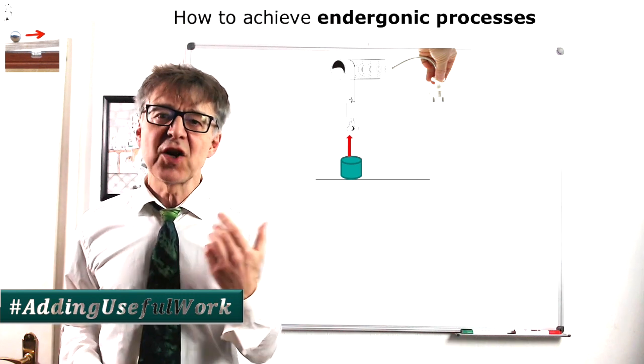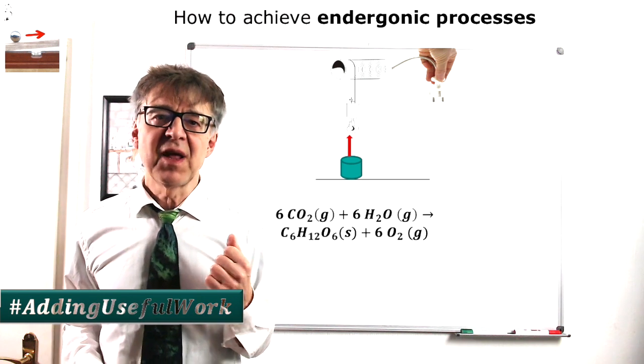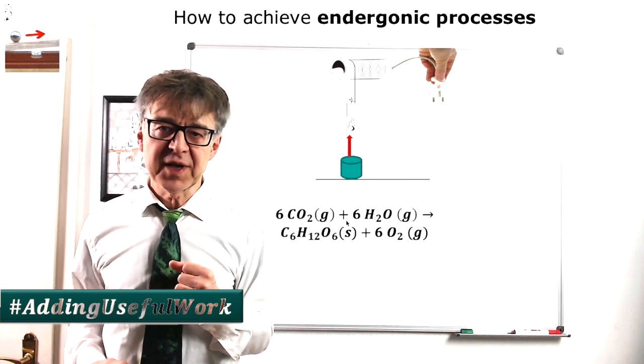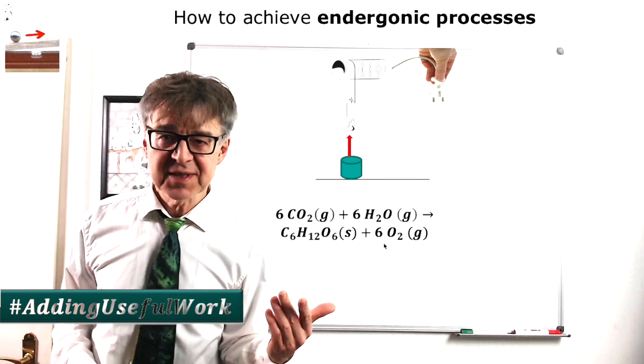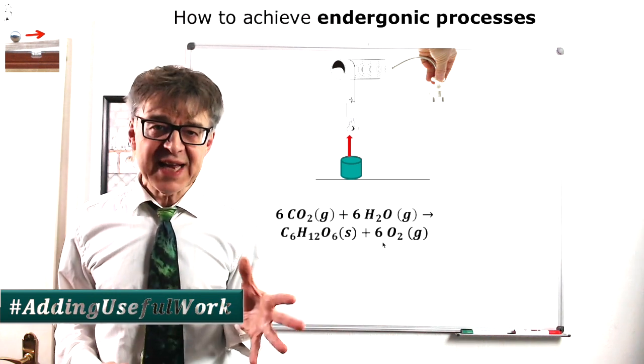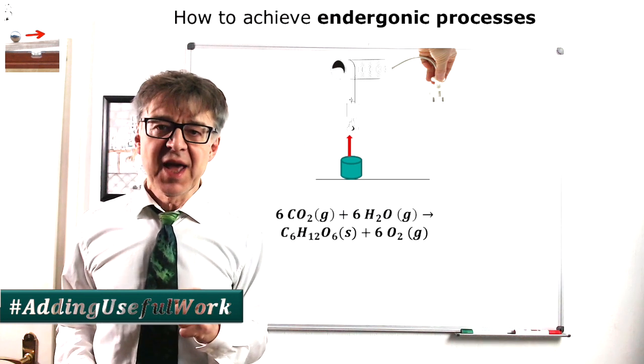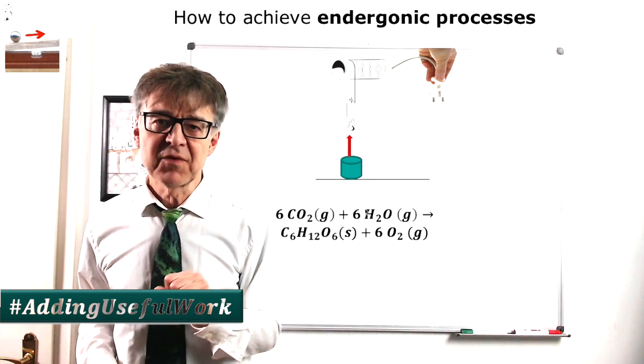Such a persistent endergonic reaction is, for example, the conversion of CO2 and water into glucose and oxygen. This so-called photosynthesis only works because light energy, useful work, can be coupled into the system from the outside.